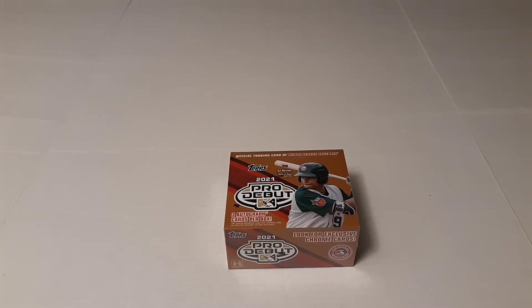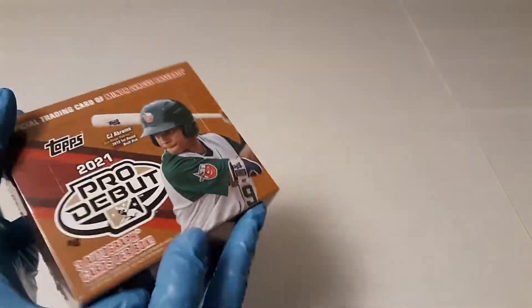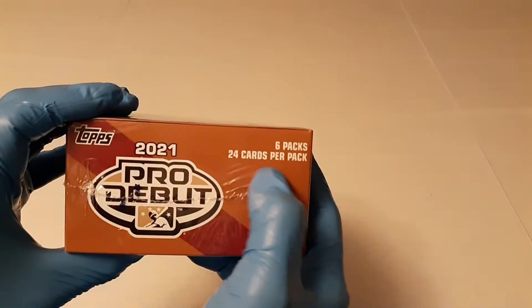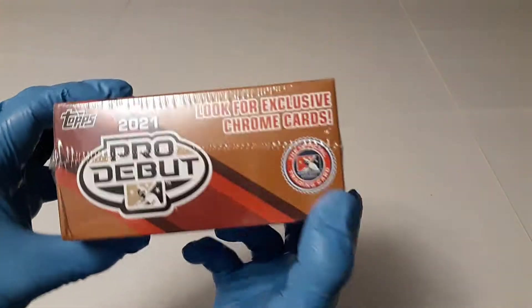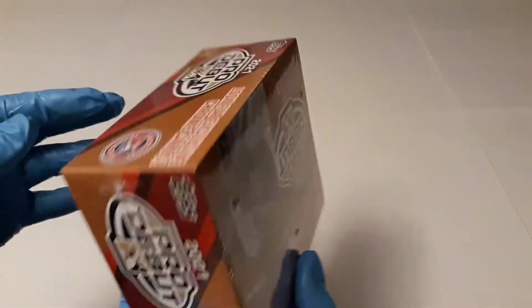Hi everyone, welcome to another video. We're going to do a Jumbo Box, a 2021 Topps Pro Debut. I've got three autographs per box. There are six packs, 24 cards per pack, and the big draw is the Chrome cards, which I am looking to complete a set on eventually.